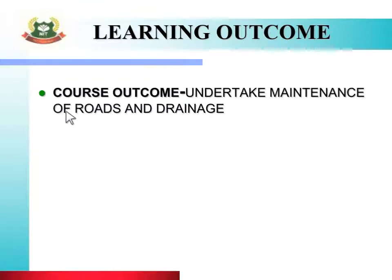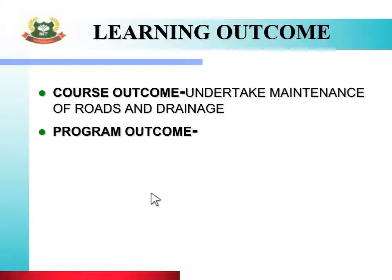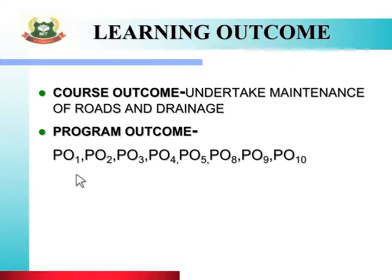Course outcome: Undertake maintenance of roads and drainage — road maintenance and drainage ka kaam aap kar sakti ho. Second is program outcome, which includes PUO 1, 2, 3, 4, 5, 8, 9, 10 — covering basic knowledge, discipline knowledge, experiment and practice, engineering tools, engineer and society, individual and teamwork, communication, and lifelong learning.